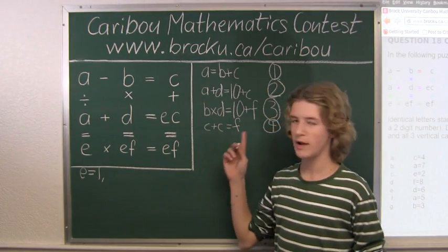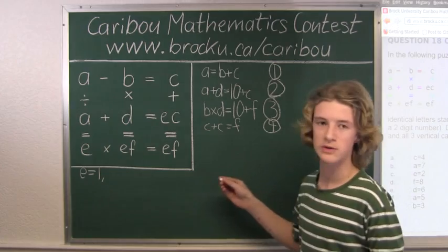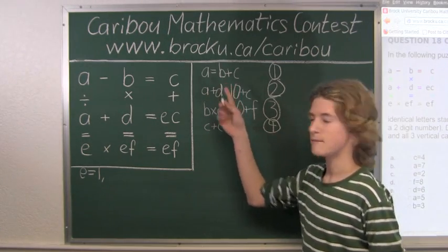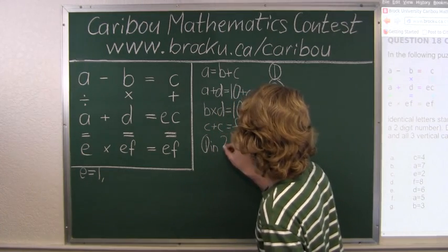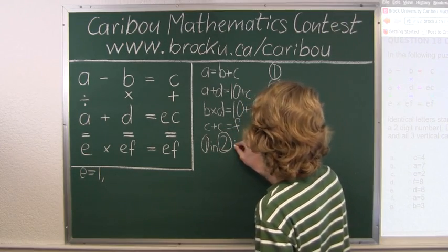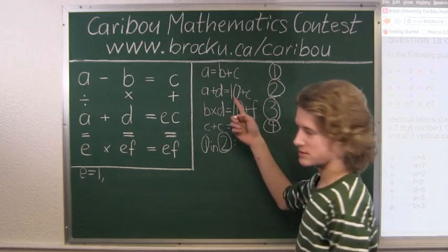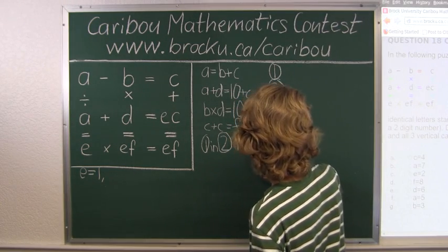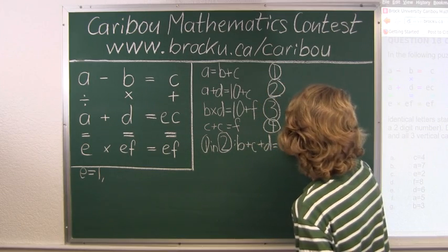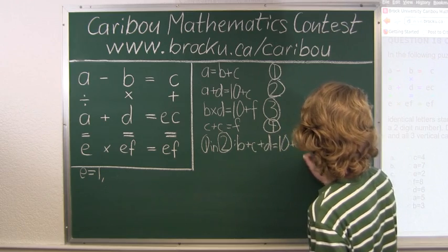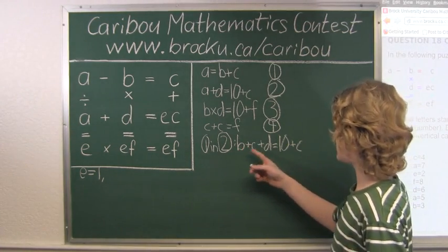So one way to solve such equations is to substitute variables from one equation into another equation. So what we will do is substitute A equals B plus C into the second line. So instead of writing A here, we will write B plus C. So B plus C plus D equals 10 plus C. So now we know that we can subtract C from both sides, so we would have B plus D equals 10.